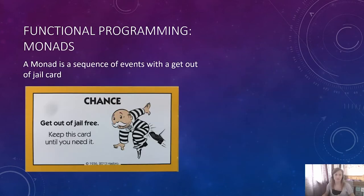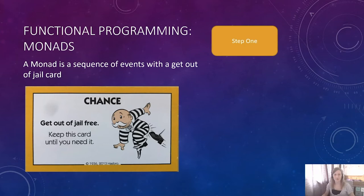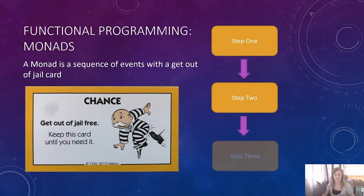So, what is a monad? Monads, if you were to Google them, would come back with lots of convoluted, really long-winded answers. In essence, a monad is a sequence of events with a get-out-of-jail card. So if you've got your code with step one, step two, step three, in any of these steps you've got a get-out-of-jail card — you can break out of the sequence at any time without having to use a big try-catch around the statement. The monad handles it, and you'll have happy paths and sad paths for your code.